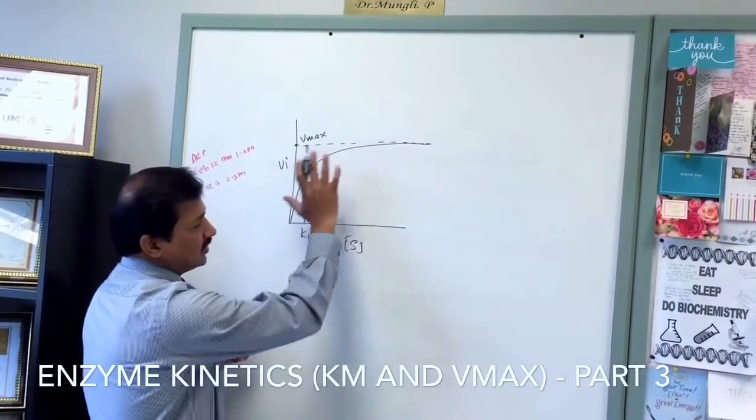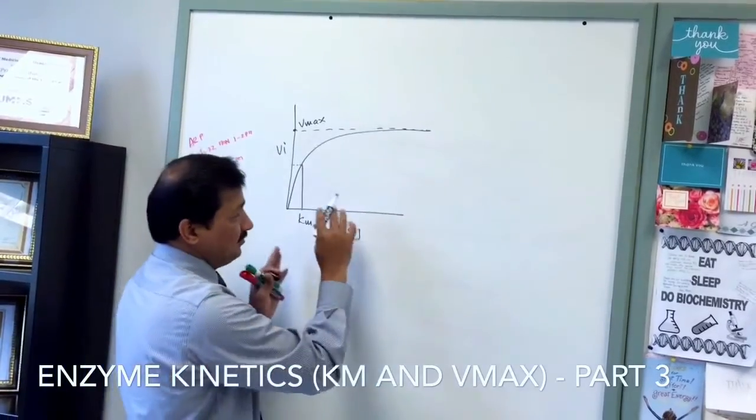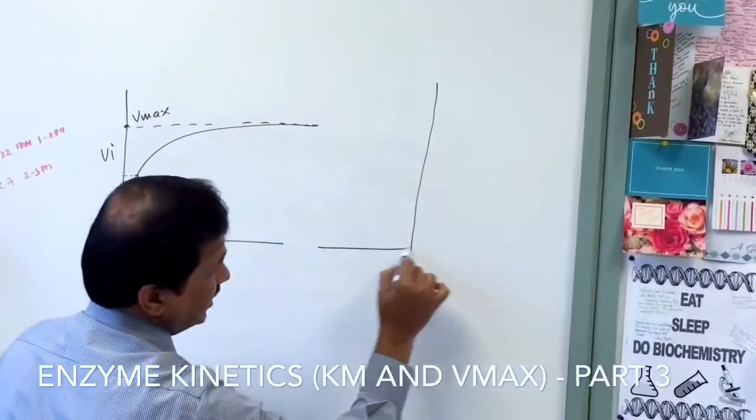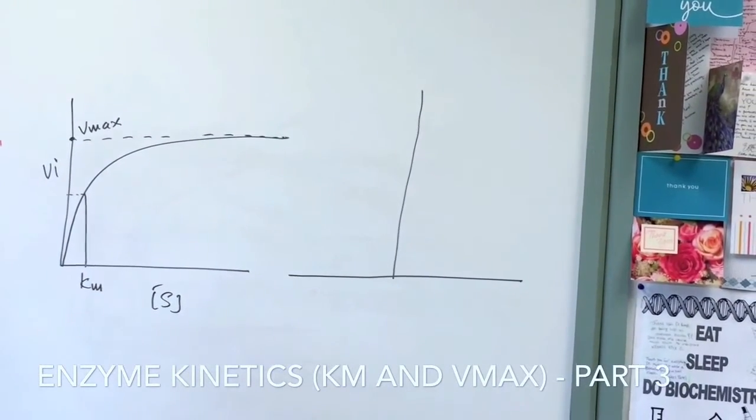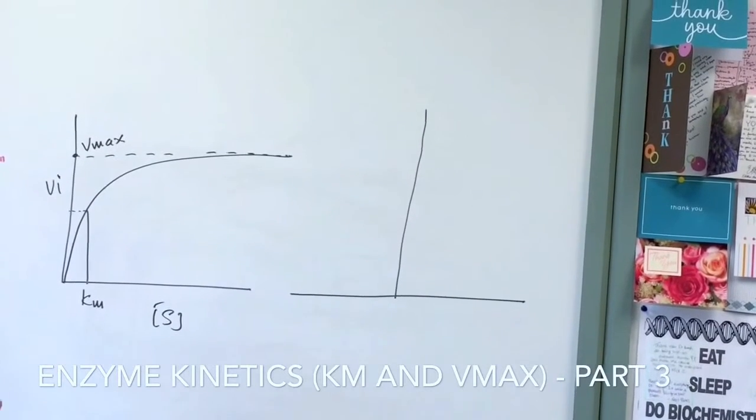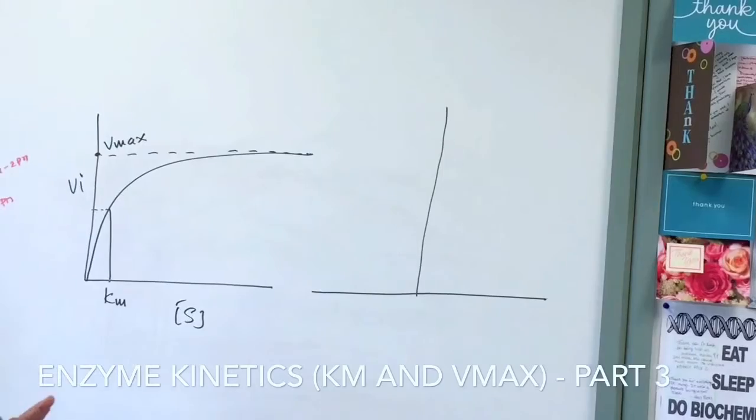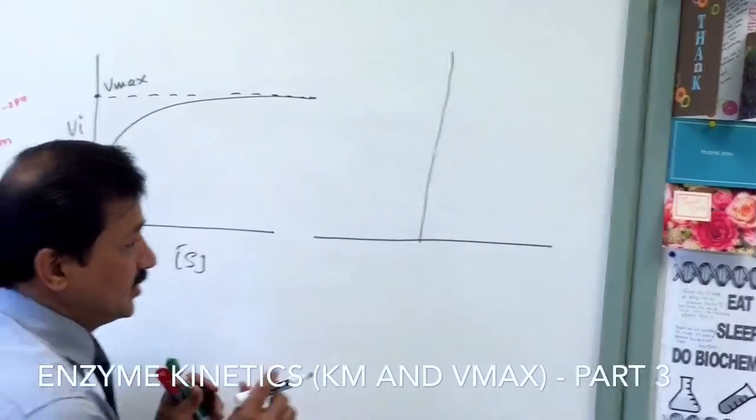This is how the Michaelis-Menten plot goes. The Lineweaver-Burk plot is the reciprocal of the Michaelis-Menten kinetics. The Michaelis-Menten equation you have seen in my previous video. Now I am going to explain the Lineweaver-Burk plot.